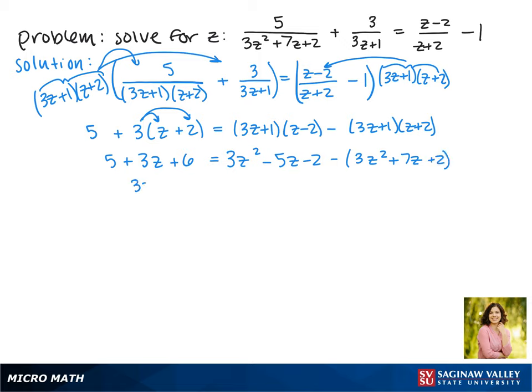To simplify on the left, that 5 and 6 become 11, so we have 3z + 11. Over here, the 3z² and -3z² will cancel out. And then we have -5z - 7z and -2 - 2.